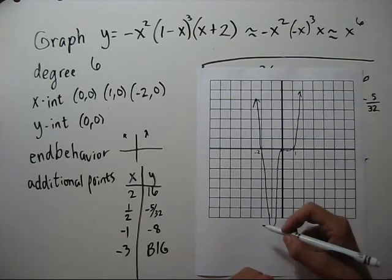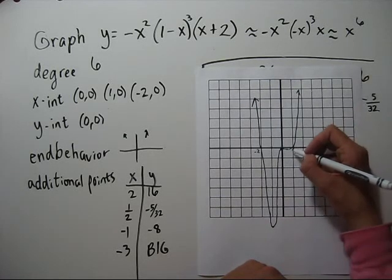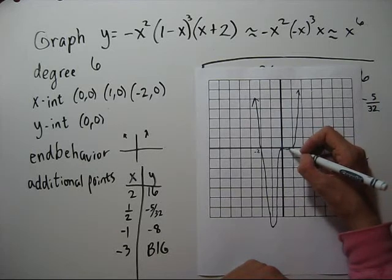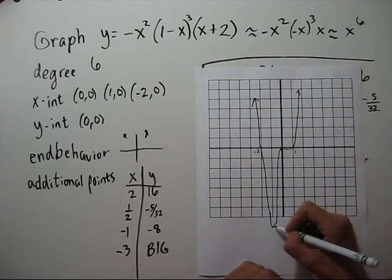Now it looks like negative eight is the minimum of this function. And that negative five thirty seconds is a local minimum. They might not be. You'll find out how to exactly find the minimum and maximums when you take calculus. This is just a rough idea.